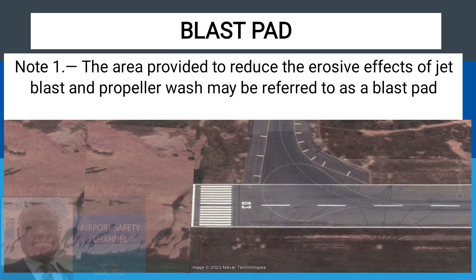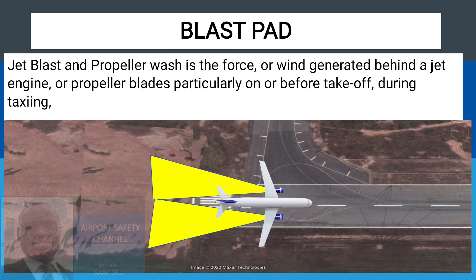On this screen, the question is: is there a blast pad? The answer is no. Before the beginning of the runway, you will observe that the entire location is eroded. This is due to the effect of jet blasts. A jet blast or propeller wash is the force or wind generated behind a jet engine or propeller blades, particularly on or before takeoff and during taxi. So any time the aircraft moves, it generates jet blasts, which has the effect of washing away the topsoil, causing erosion.